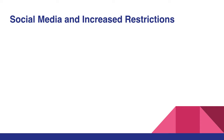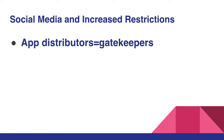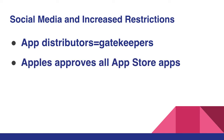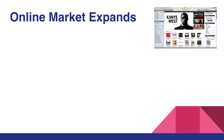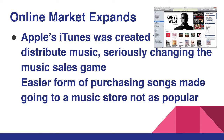However, this open distribution system has led to increased restrictions. For example, app distributors have become gatekeepers. The apps that users love and enjoy on their digital devices are actually approved by the company that owns the App Store, which is essentially the case with the Apple App Store. Facebook also tries to restrict certain open Internet access on its site or app to keep up with privacy for users.